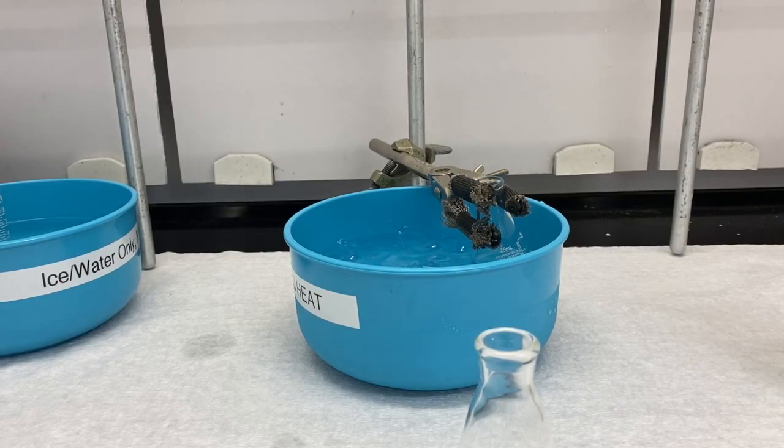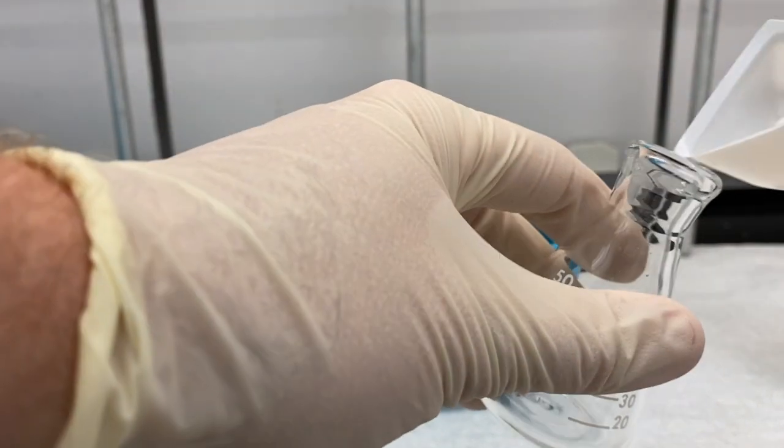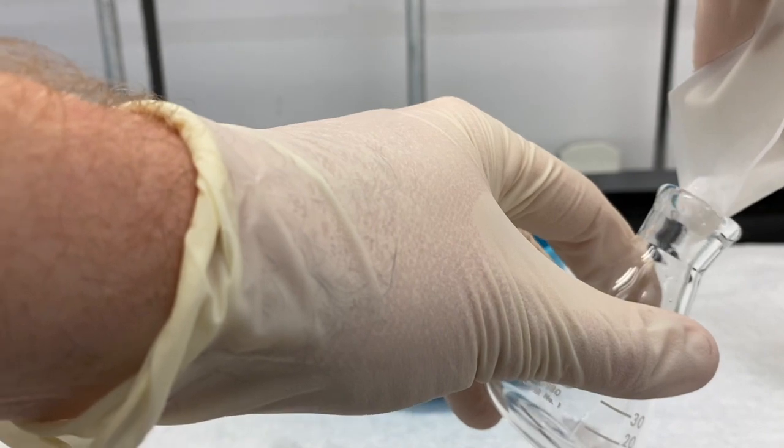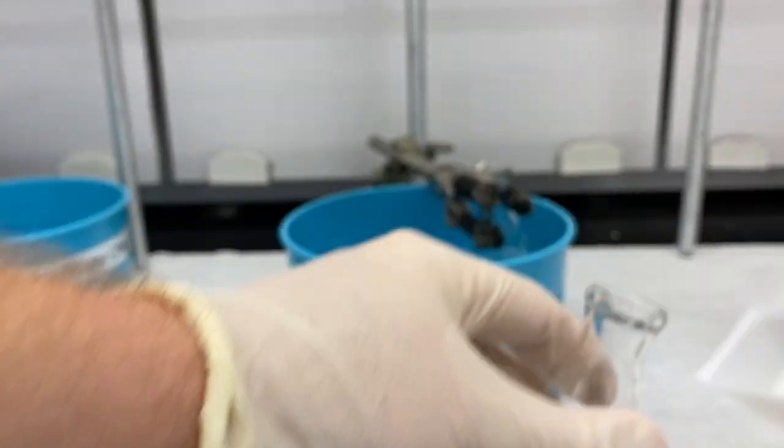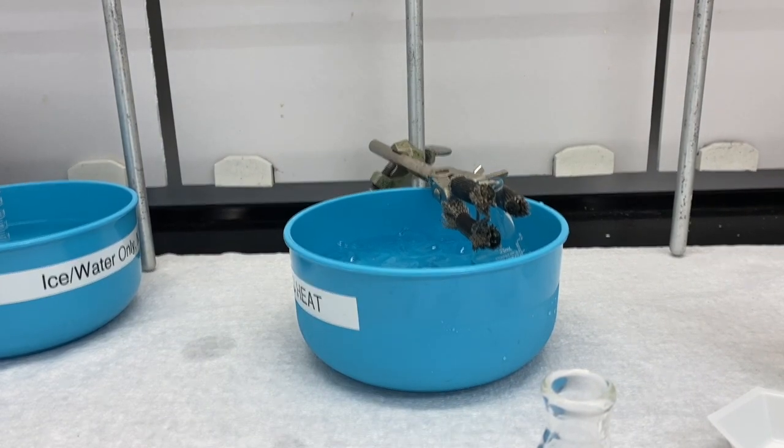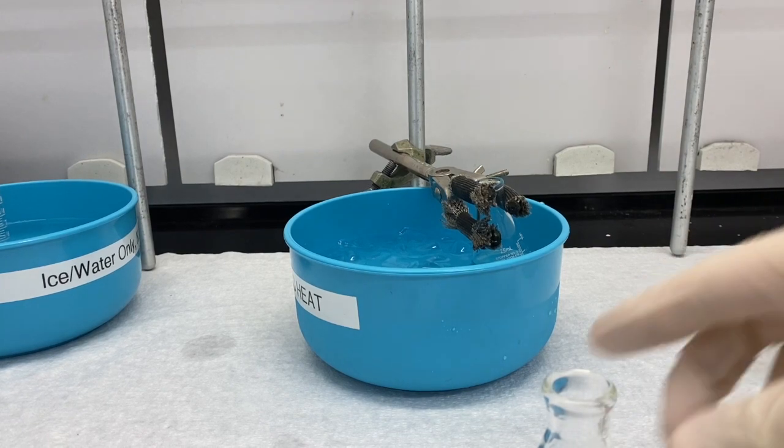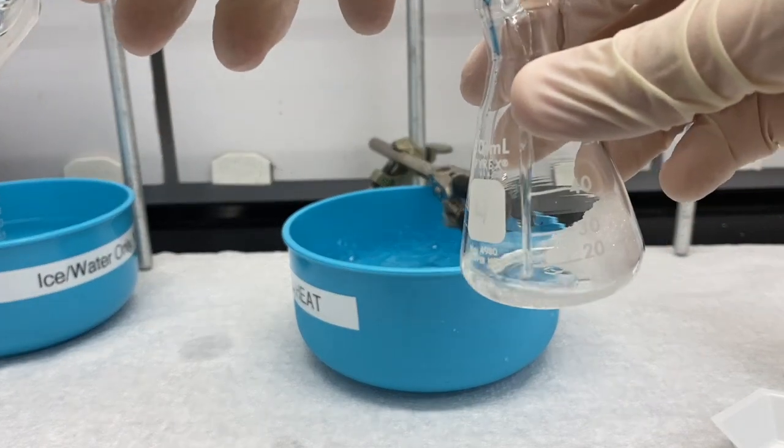All right, so we're going to place our dimethoxybenzene in our 50 ml Erlenmeyer flask. You can see in the back I've got the sulfuric acid chilling. I'm going to add my glacial acetic acid, 10 ml.